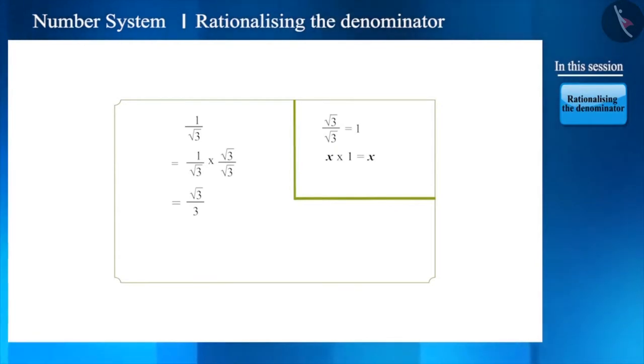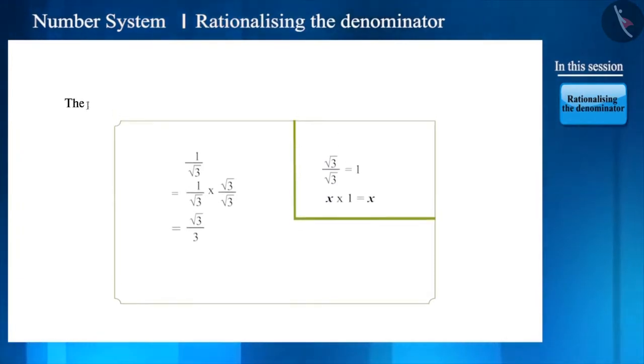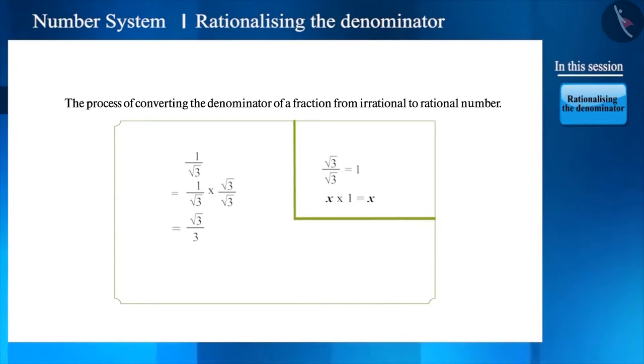So friends, what have we learned so far? We learned that if a fraction has an irrational number as its denominator, then it is difficult to divide it. But if we convert the irrational number to a rational number, then it becomes easier to solve the division. The process of converting the denominator of a fraction from irrational to rational number is called rationalization of denominator.